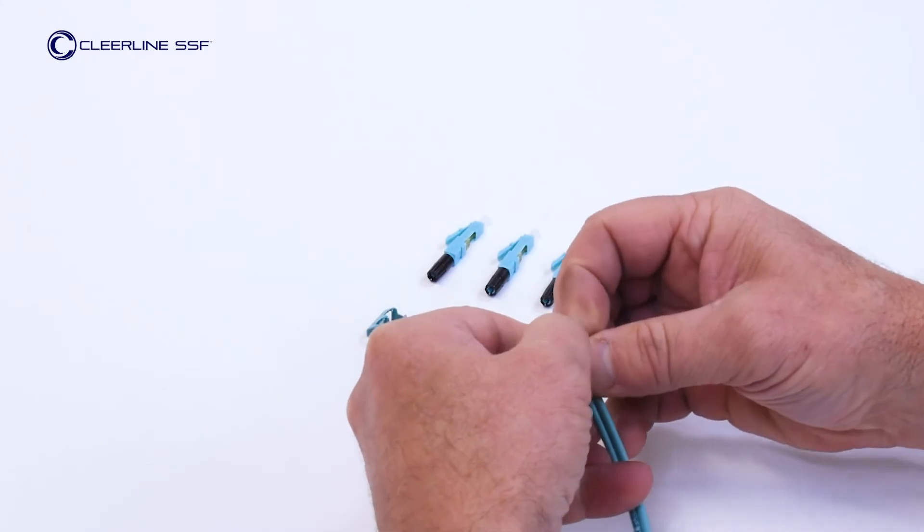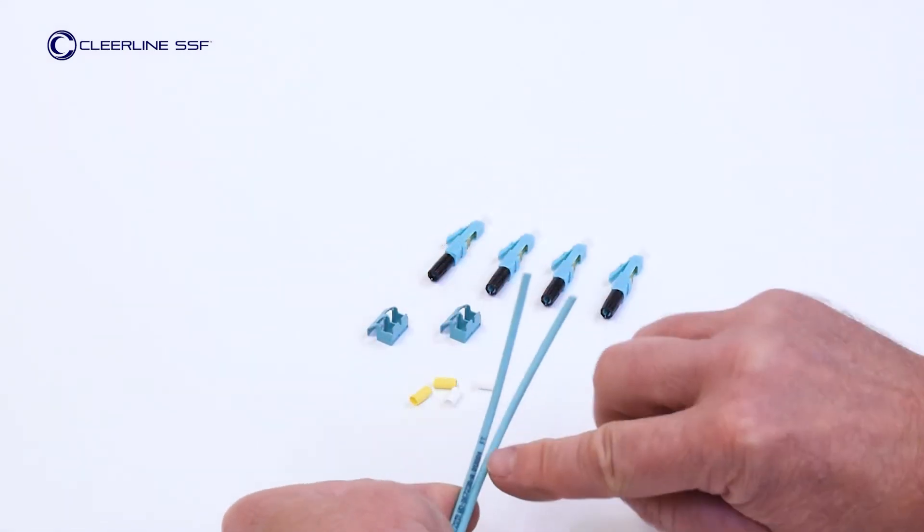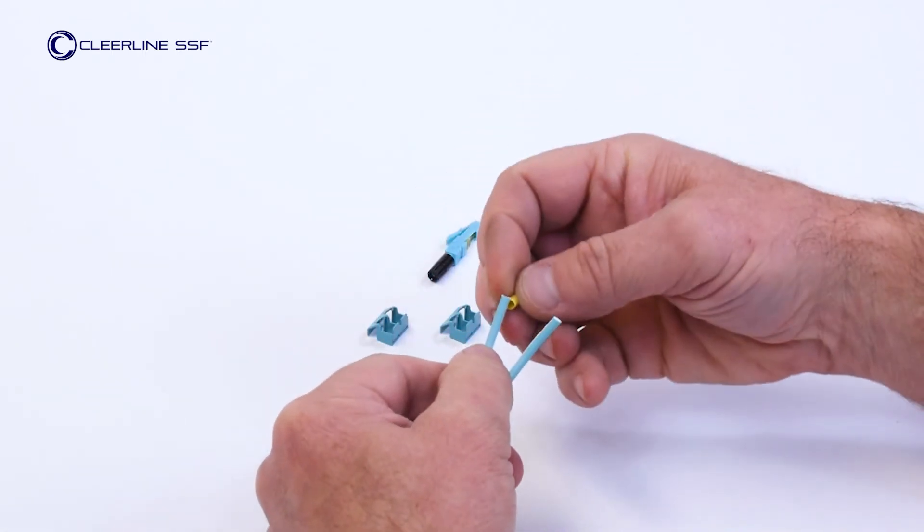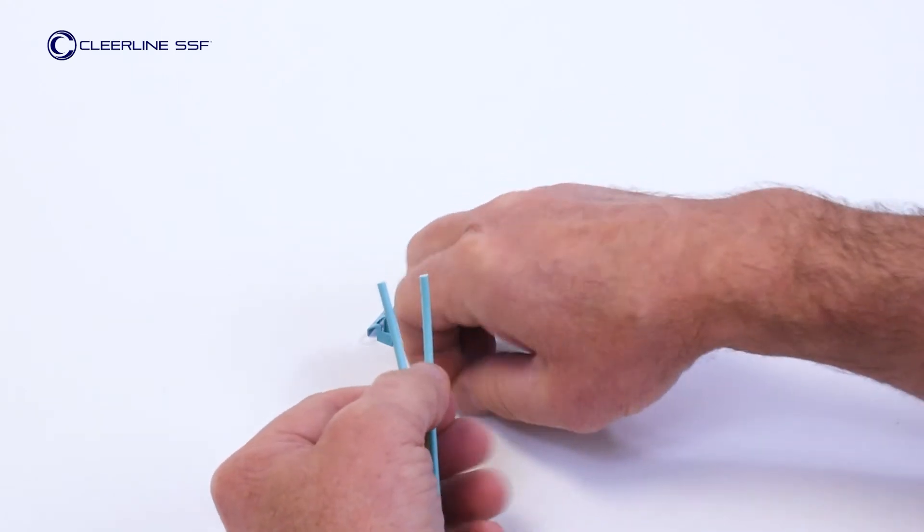Separate the two strands of the duplex cable. Place the yellow tube on the leg with the print legend, typically containing the blue fiber. Place the white tube on the other cable leg.